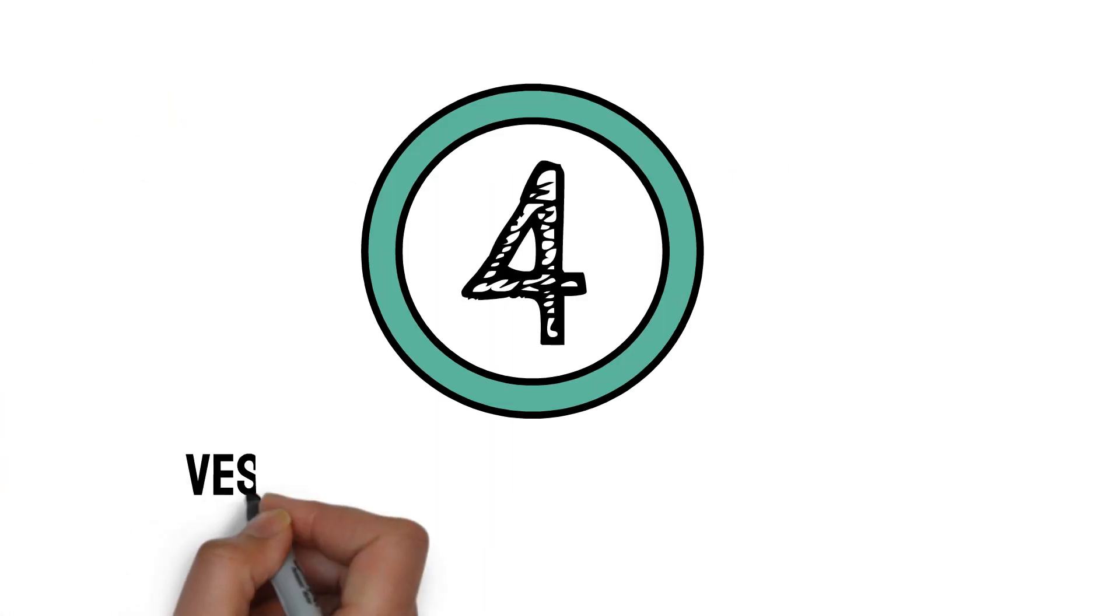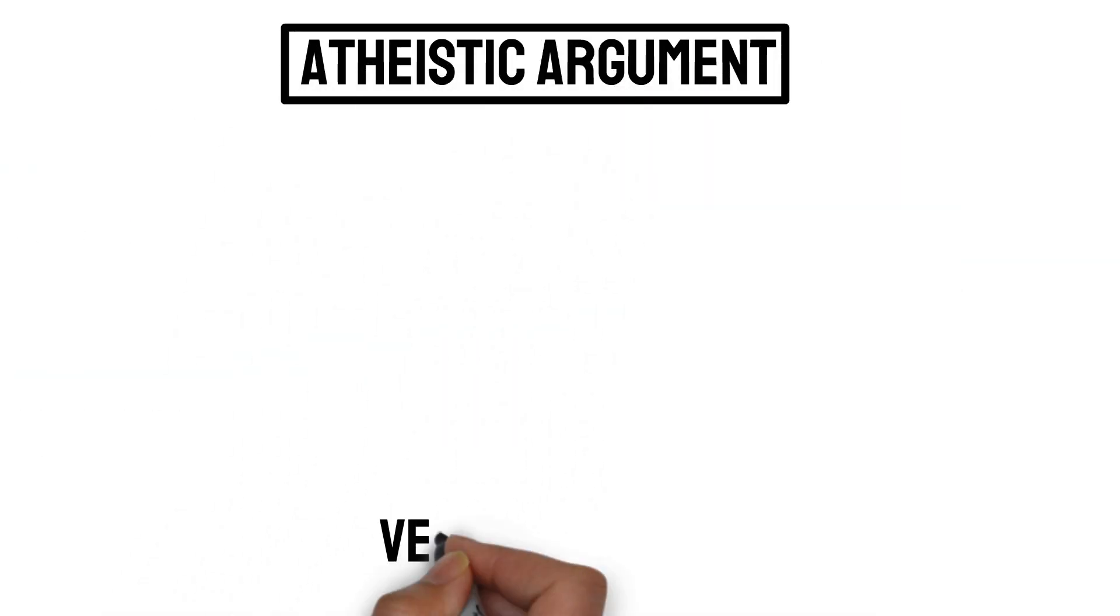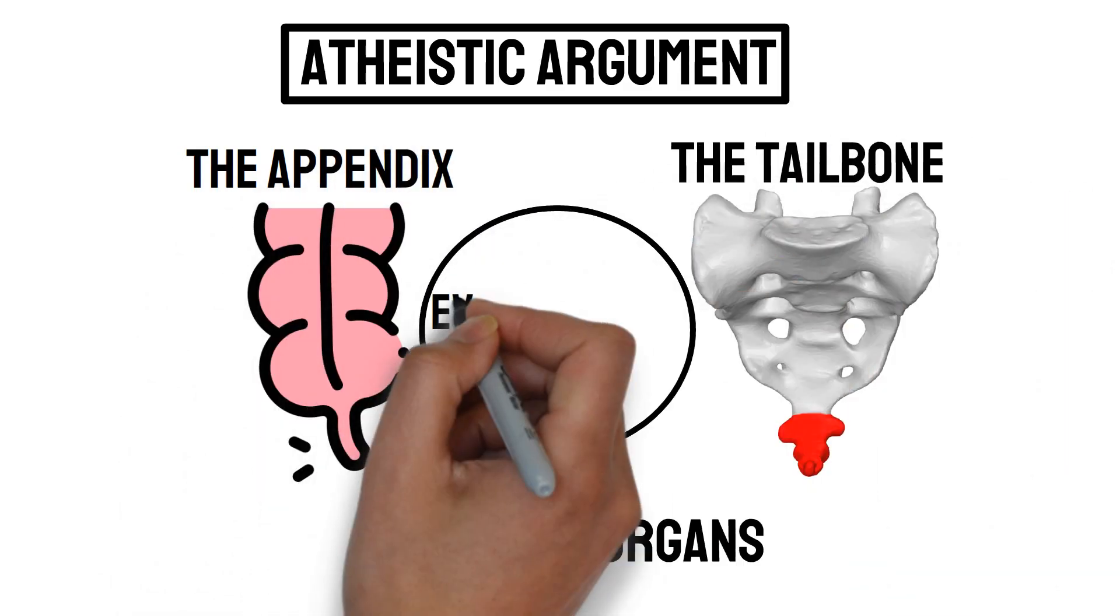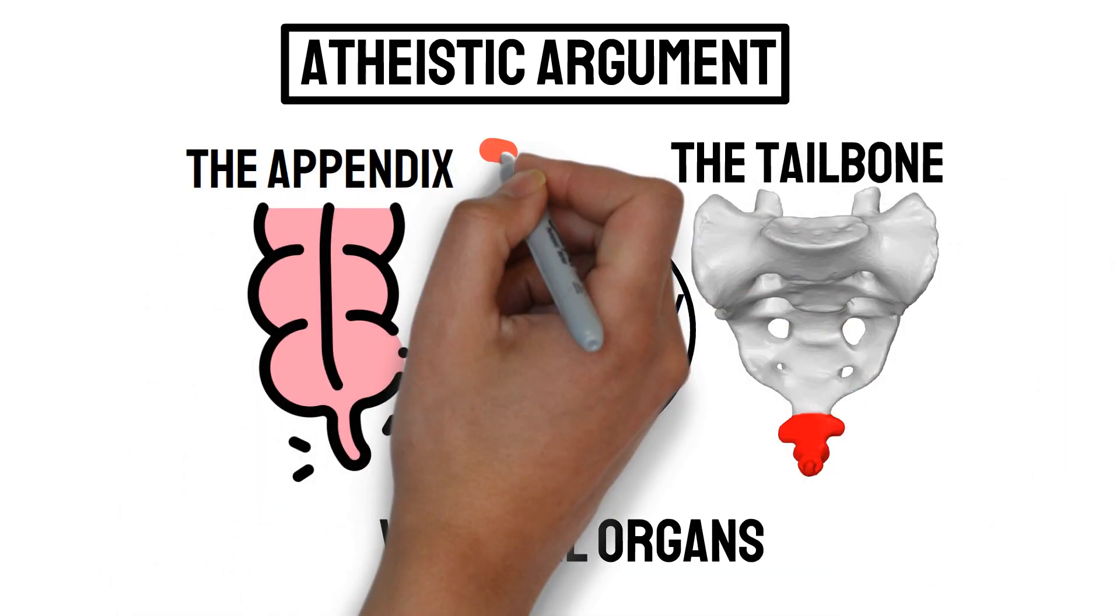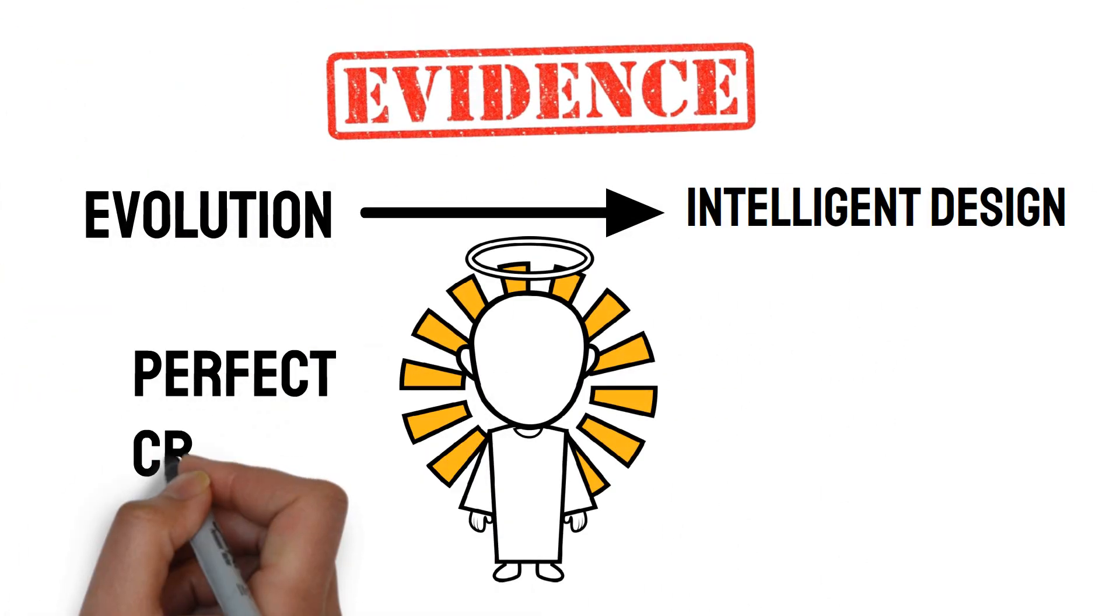Number four, vestigial organs prove evolution. The atheistic argument is that vestigial organs like the appendix and the tailbone are leftover remnants of evolutionary history and no longer serve a purpose. This is evidence for evolution and against intelligent design, as a perfect creator would not create useless organs.